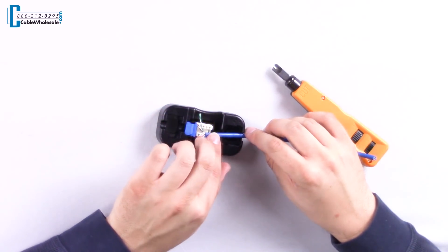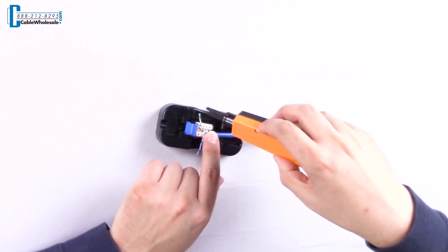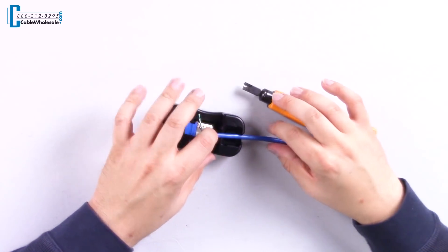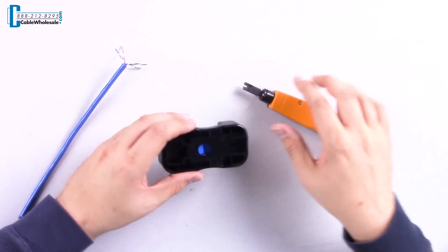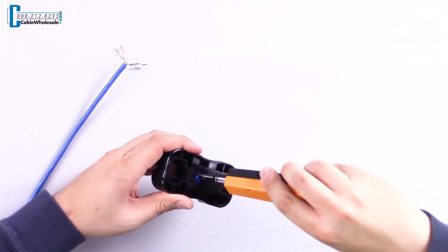Once your cable is positioned, you can proceed with the punch down. To release the keystone from the stand, turn it over and use your finger or tool in the hole to release it.